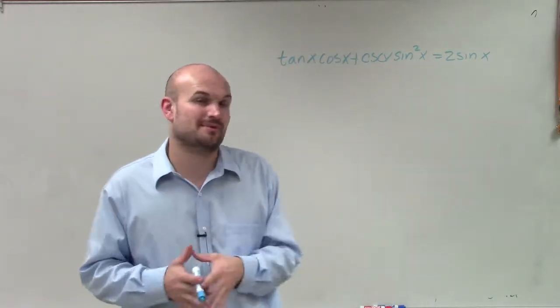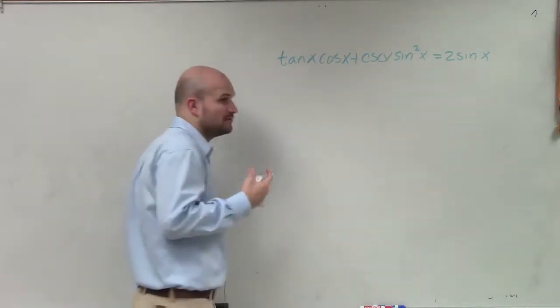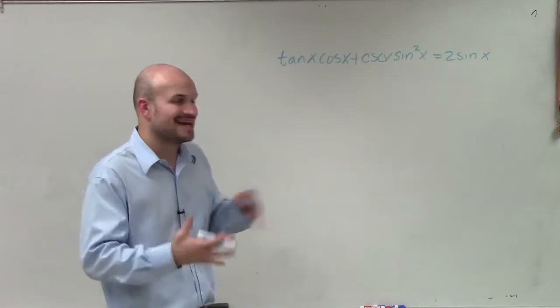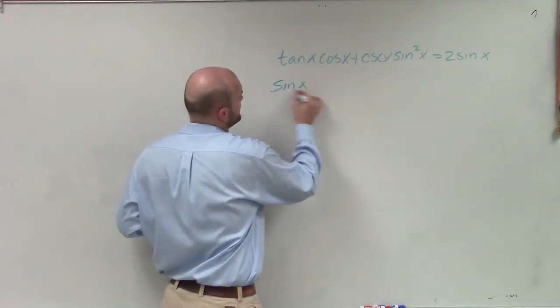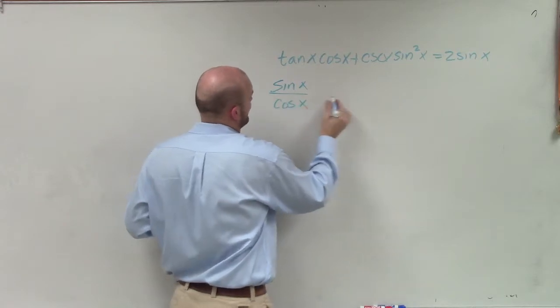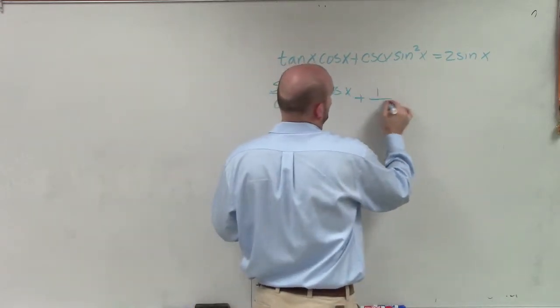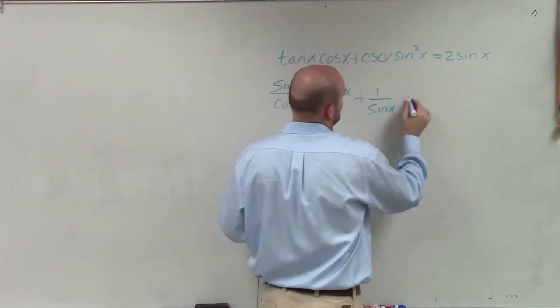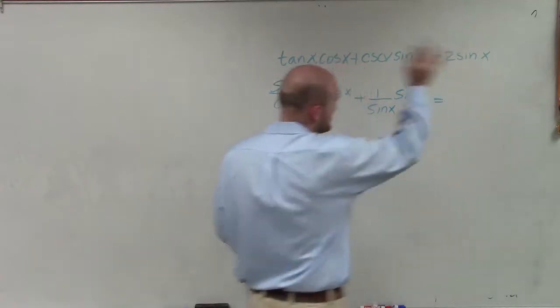So to help me visualize this, what I'm going to do is convert everything to sines and cosines. And that is a very helpful technique to use when you're trying to verify your identities. So I have sine of x over cosine of x times cosine of x plus 1 over sine of x times sine squared of x equals 2 sine of x.